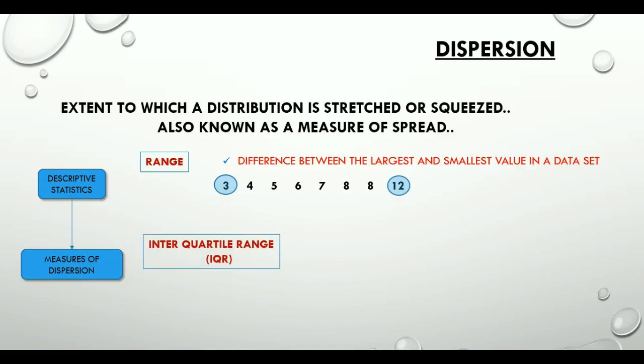Second measure is the interquartile range, abbreviated as IQR. It is based on dividing a data set into quartiles. Quartiles divide a data set into four equal parts. Values dividing each part are called the first, second, and third quartiles and denoted by Q1, Q2, and Q3 respectively. Q1 indicates the middle value in the first half of the data set. Q2 is the median value, and Q3 is the middle value in the second half of the data set. IQR is equal to the difference between Q3 and Q1. That is Q3 minus Q1 is the interquartile range.